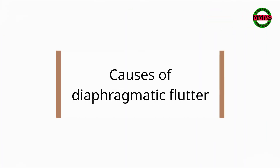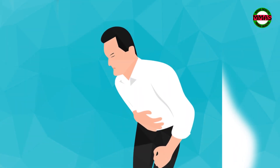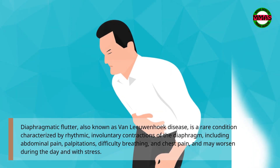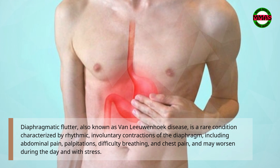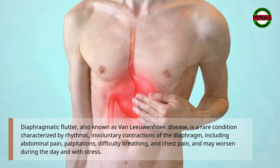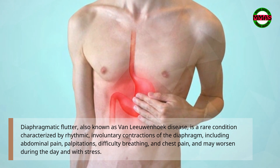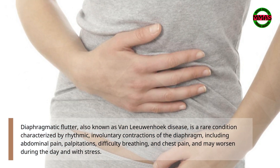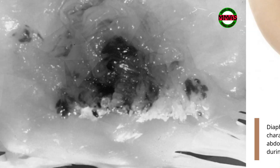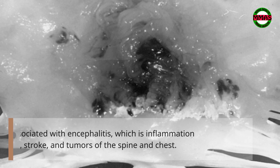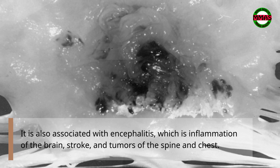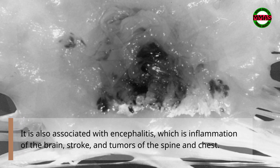Causes of diaphragmatic flutter: Diaphragmatic flutter, also known as Van Leeuwenhoek disease, is a rare condition characterized by rhythmic, involuntary contractions of the diaphragm, including abdominal pain, palpitations, difficulty breathing, and chest pain. Symptoms may worsen during the day and with stress. It is also associated with encephalitis, which is inflammation of the brain, stroke, and tumors of the spine and chest.